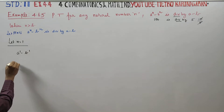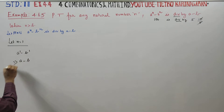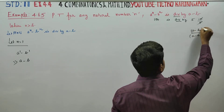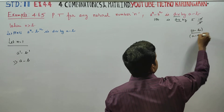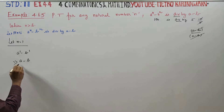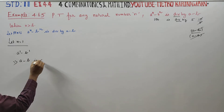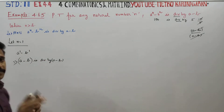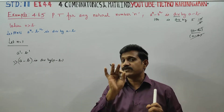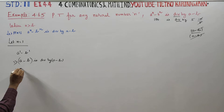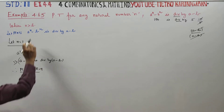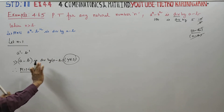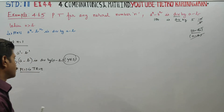What is a power 1 minus b power 1? That is a minus b. And a minus b is divisible by a minus b. So n equal to 1 is true — yes, it is divisible by a minus b. P(1) is true.